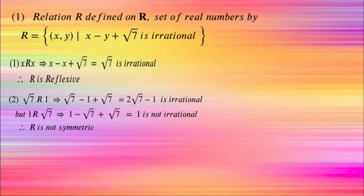For symmetry, if √7 is related to 1, then √7 minus 1 plus √7, which is 2√7 minus 1, is irrational. But 1 related to √7 gives 1 minus √7 plus √7, which is 1, and 1 is not irrational. So √7 is related to 1, but 1 related to √7 is not true. So it is not symmetric.